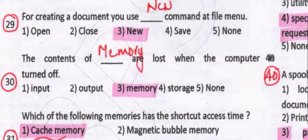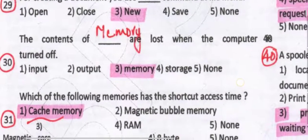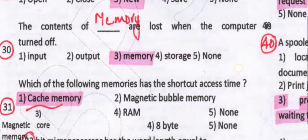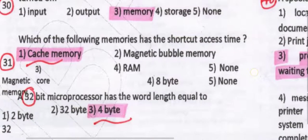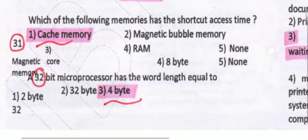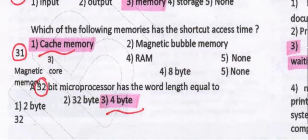The contents of memory are lost when the computer is turned off. So whatever content you have, if you don't save it, it will be lost. The memory with the shortest access time is cache memory — it has the shortest access time.